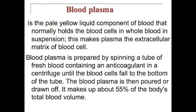Blood plasma is the pale yellow liquid component of blood that normally holds the blood cells in suspension, making plasma the extracellular matrix of the blood — a good exam question. Blood plasma is prepared by spinning a tube of fresh blood containing an anticoagulant in a centrifuge until the blood cells fall to the bottom. The plasma is then poured or drawn off and makes up about 55% of the body's total blood volume.